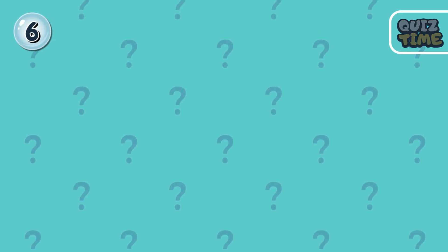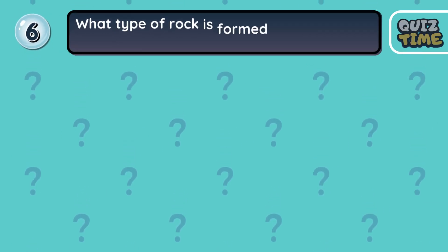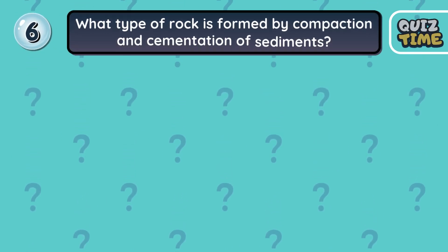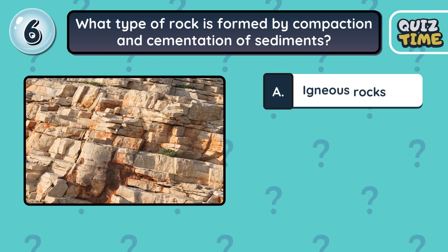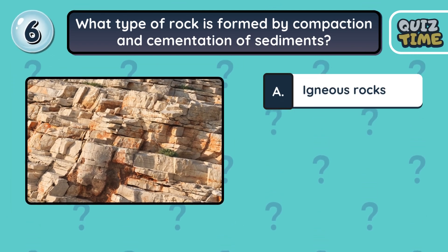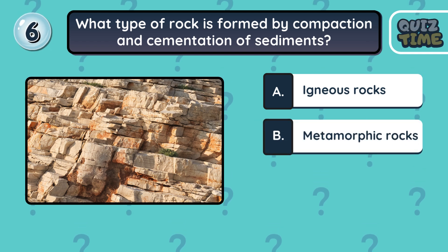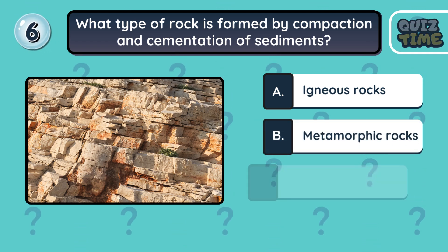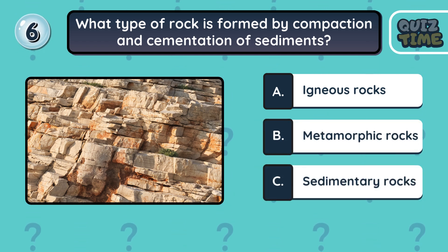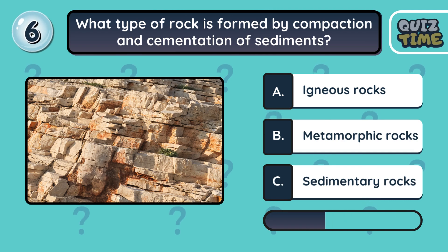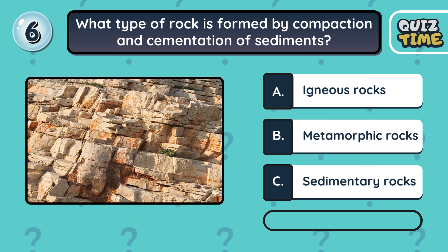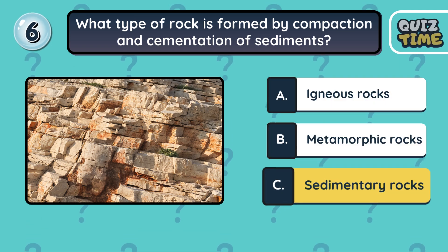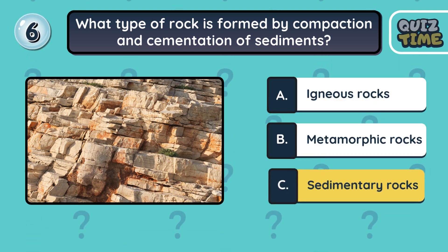Number 6. What type of rock is formed by compaction and cementation of sediments? A. Igneous rocks. B. Metamorphic rocks. C. Sedimentary rocks. The correct answer is C. Sedimentary rocks.